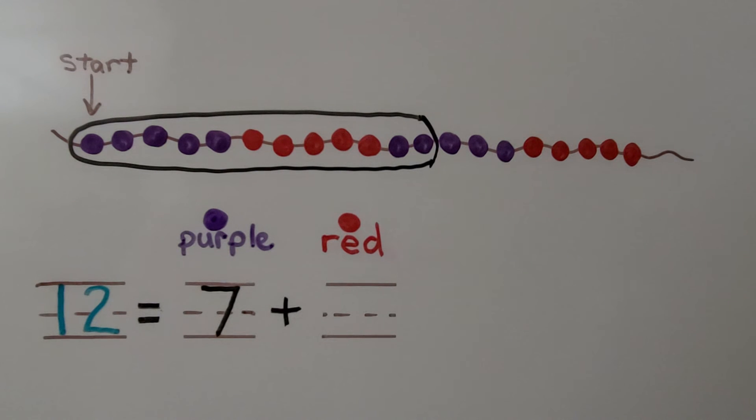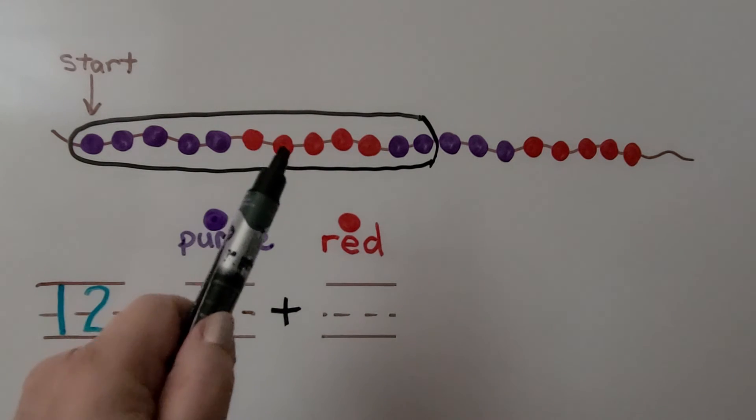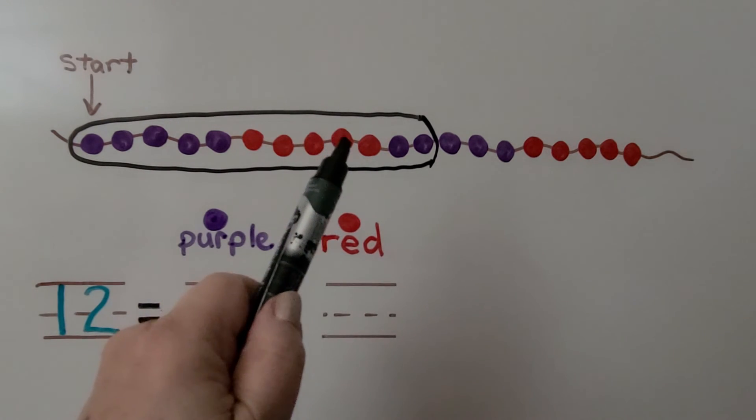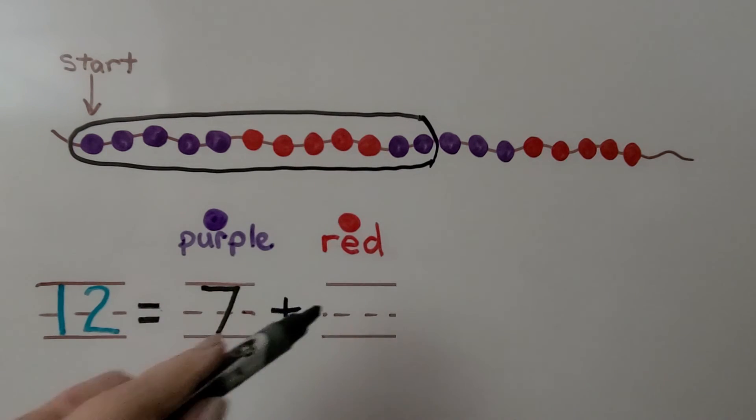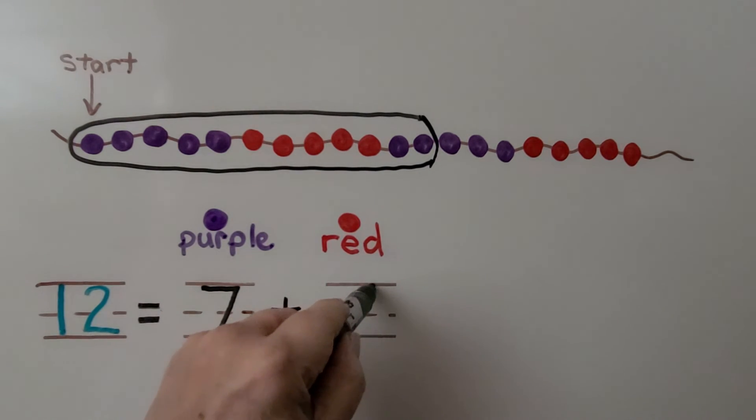Now we need to count the number of red beads that we circled: 1, 2, 3, 4, 5. There are 5 red beads that we have circled and we can write the number 5.